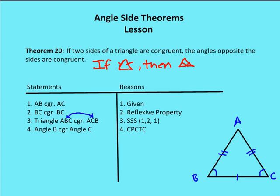Theorem number 20 — the number may differ in different books, but this theorem says that if we have two sides of a triangle that are congruent, then the angles opposite the sides are congruent. The shorthand is: if sides, then angles — represented by hash marks on two sides implying congruent opposite angles.